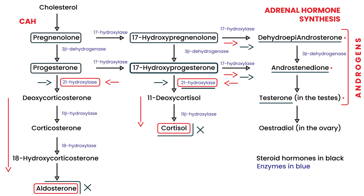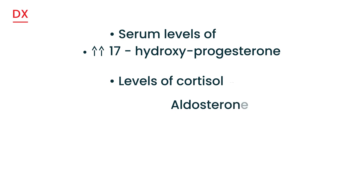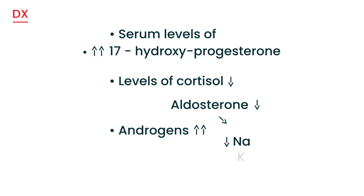You can also measure levels of cortisol and aldosterone, which will be low because they were not produced due to the deficiency of 21-hydroxylase. Androgen levels will be very high because they were produced in excess. And because aldosterone was low, you'll get hyponatremia — sodium levels will be low — and hyperkalemia, so potassium levels will be high.